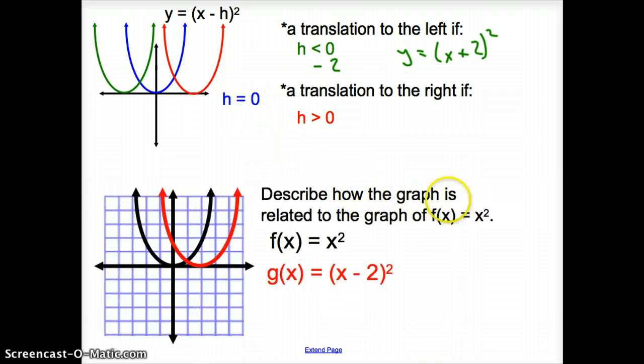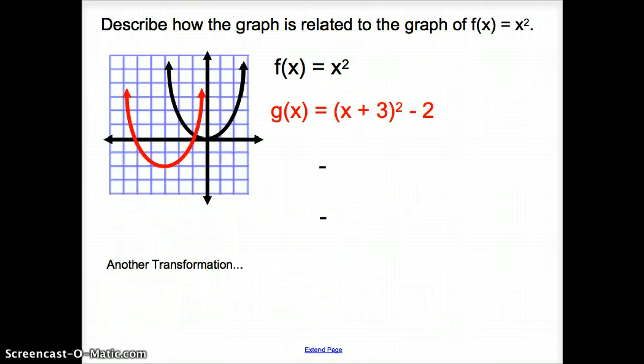So again, describe how the graph is related to the graph of f(x) equals x squared. So f(x) equals x squared is this guy running through the origin. Now I am subtracting 2. What happened to my red graph as I subtracted 2? Notice how when I subtracted 2, it was inside the parentheses. I moved it right, and how far did you move it? Right 2 units.